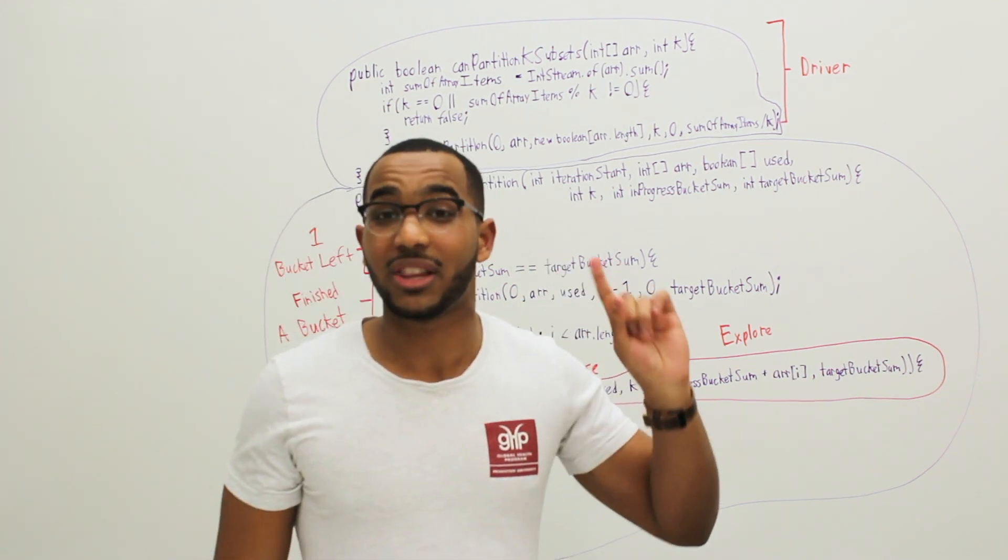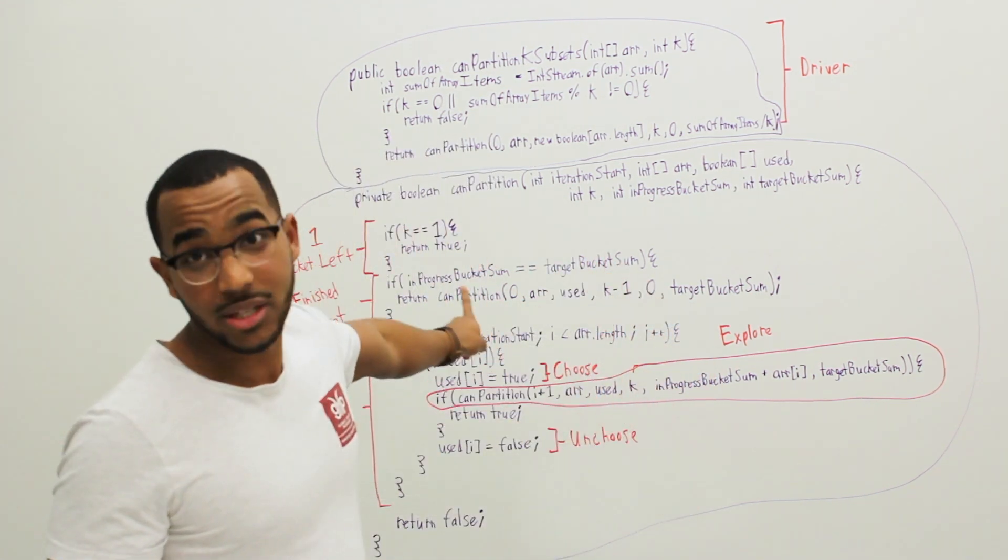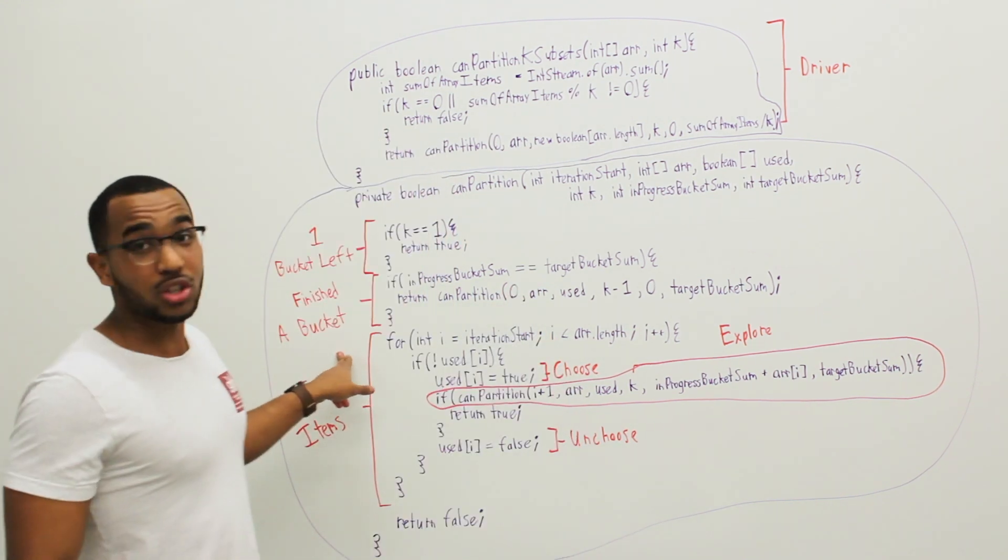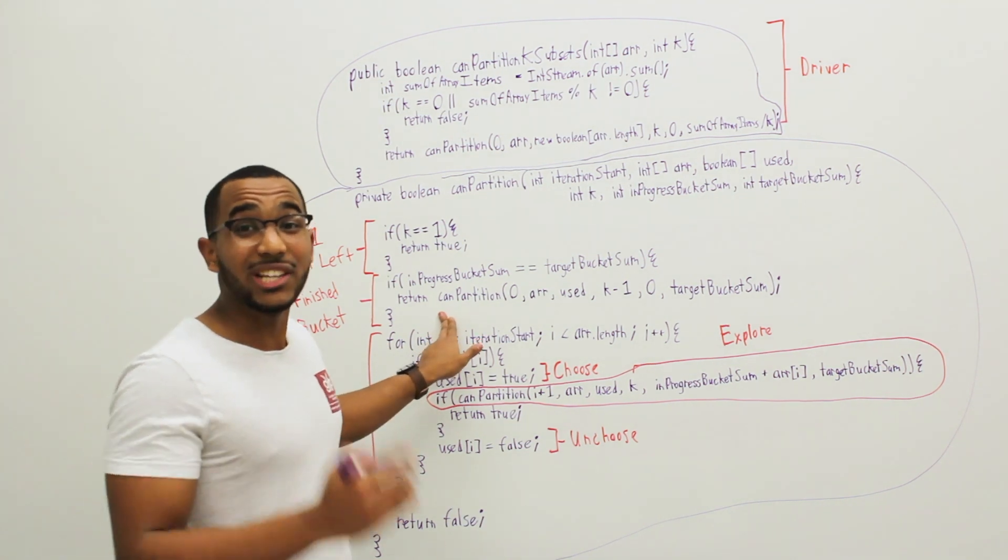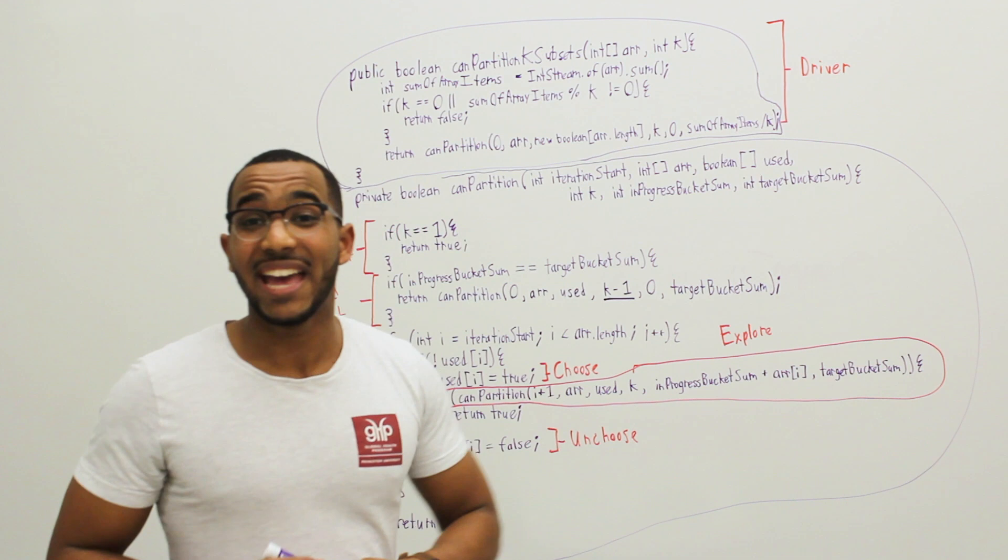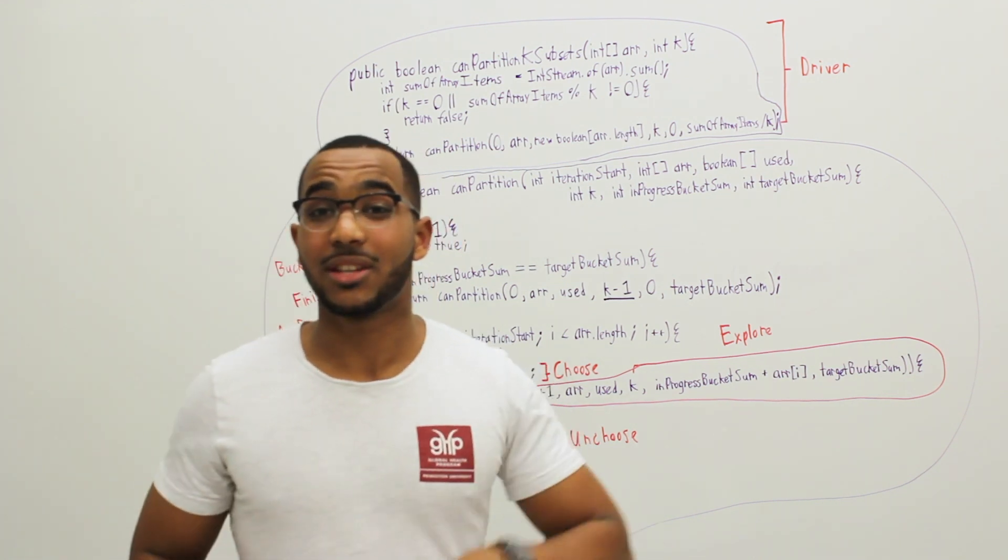So we know that we'll be able to fill that last bucket. That is why we can stop our recursion at k equals 1. When we have finished a bucket, this is our second base case. When we finish a bucket, we need to reduce k. We need to reduce k and we need to reset the sum of the bucket we're working on to 0 because we're working on a new bucket.